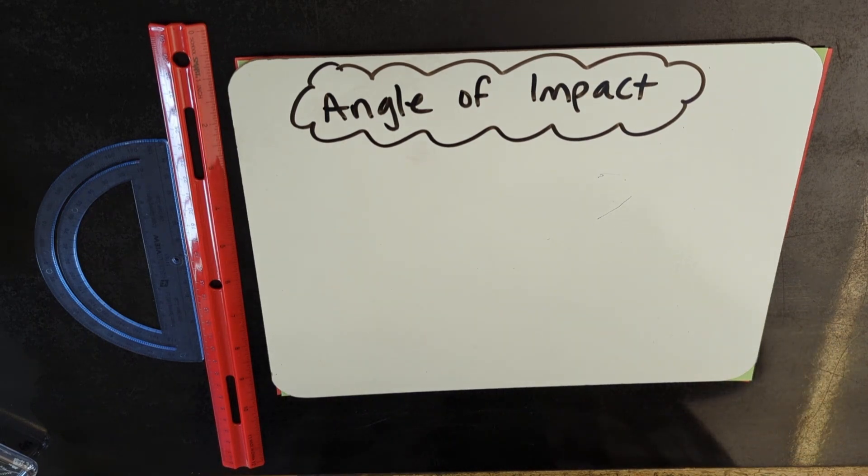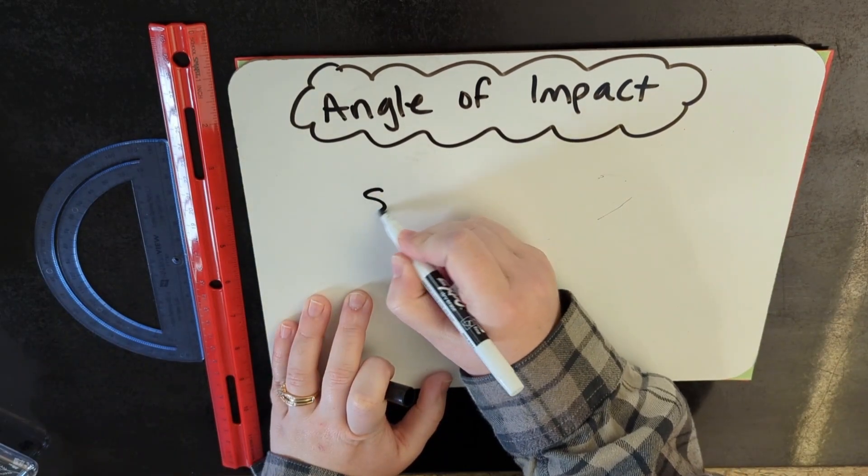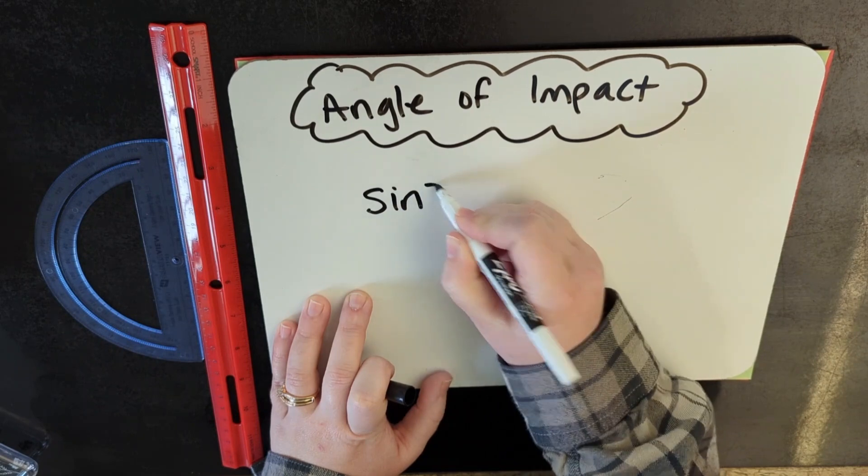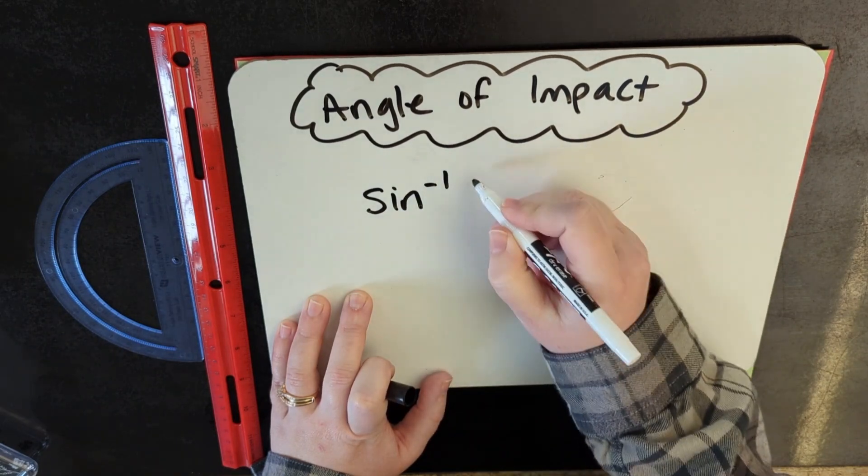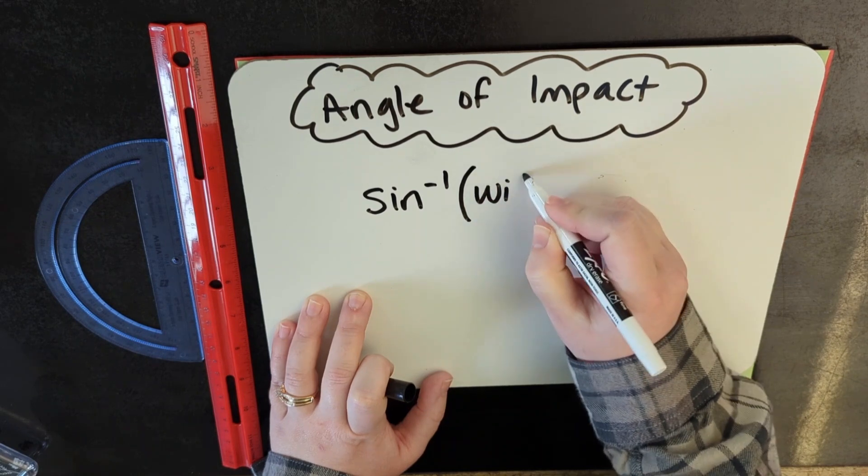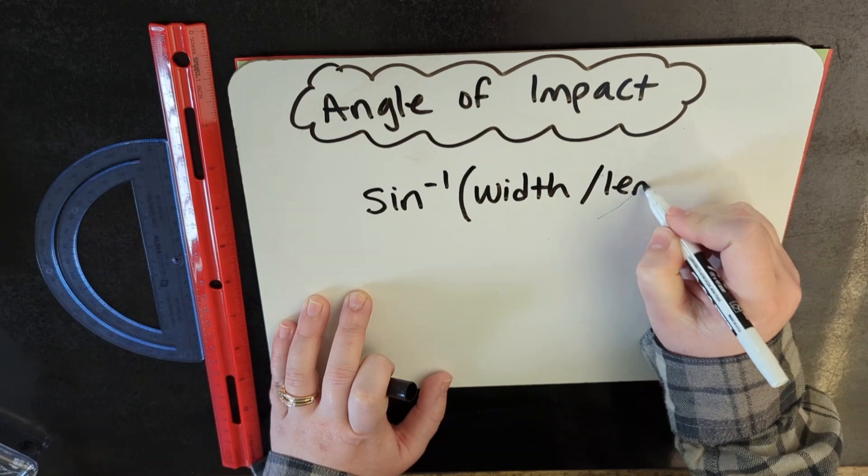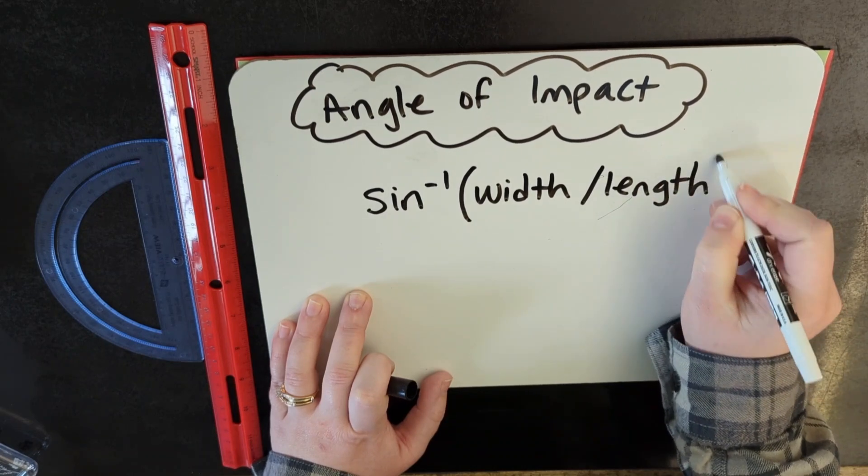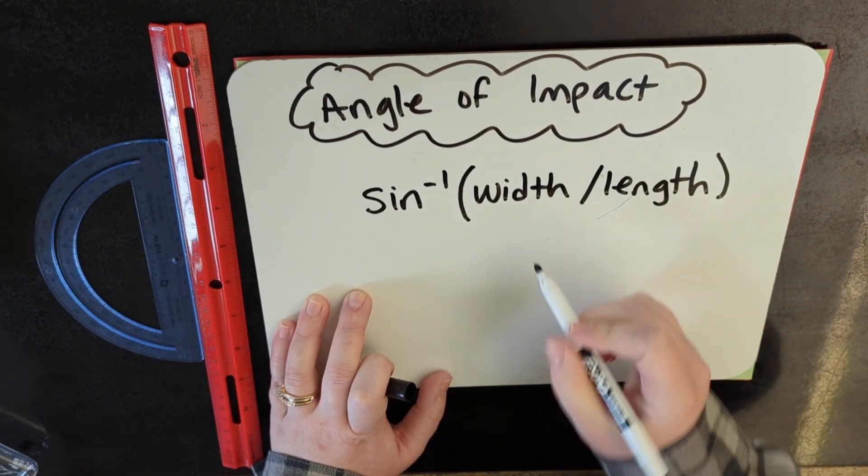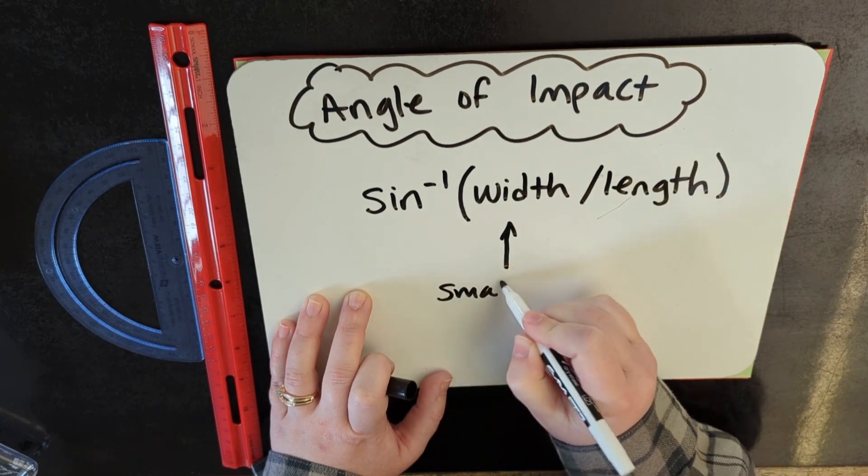To begin we need to know the equation for how to calculate the angle of impact. For us it's inverse sine of width divided by length. Just a reminder that every time the width will be the smallest number.